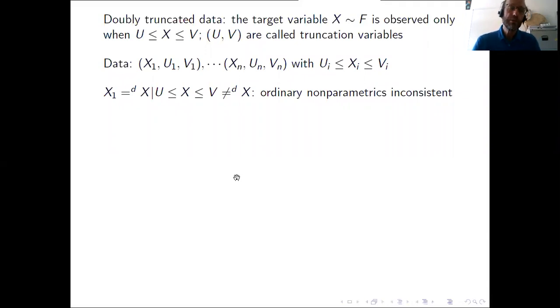And it is very important to realize that in this setting the distribution of an observed value of X, X1 say, is not the distribution of X in general because it equals the conditional distribution of X given U less than X less than V. So in this setting, ordinary non-parametric estimation approaches are in general inconsistent.